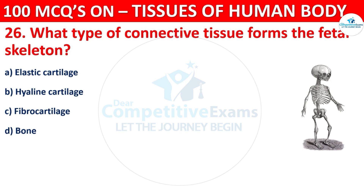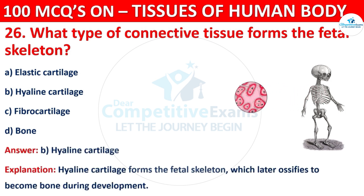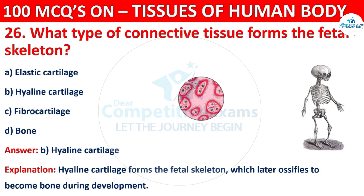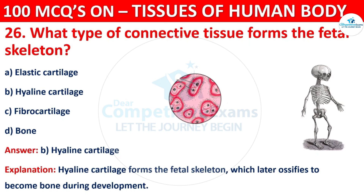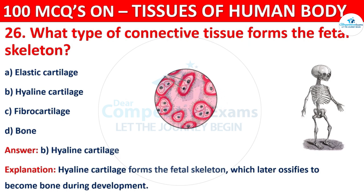The correct answer is B, i.e. Hyaline Cartilage. Hyaline Cartilage forms the fetal skeleton, which later ossifies to become bone during development.